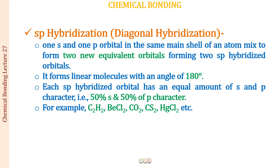We placed them so that there is maximum distance between them, so that there is minimum repulsion between them. So we placed them on a straight line — they make an angle of 180 degrees. Similarly, the orbitals will be positioned so that electrons occupying them have minimum repulsion. They will be at an angle of 180 degrees, and the molecules forming as a result of overlapping with orbitals of other atoms will be linear molecules. Because this is essentially positioned in a straight line, this is also called diagonal hybridization.